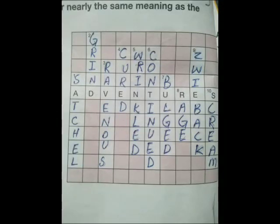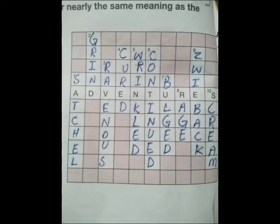Assalamualaikum dear students, today's our working is chapter number 0, Adventures of Isabel, page number 4. We will start from book work. The first thing is find words in the poem that have the same or nearly the same meaning as the following and then fill in the crosswords.